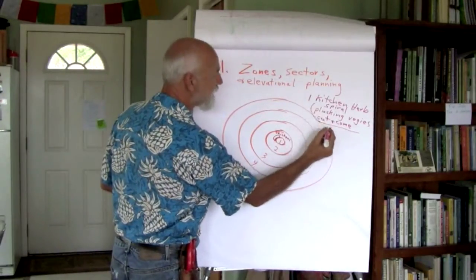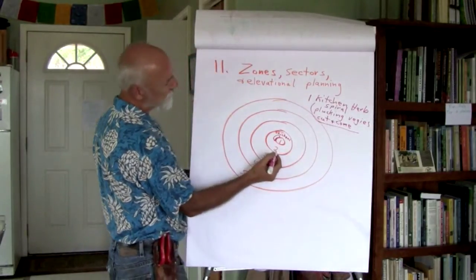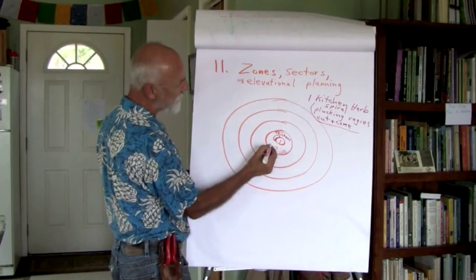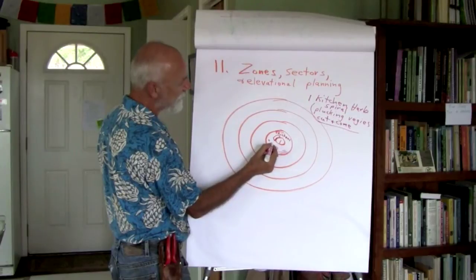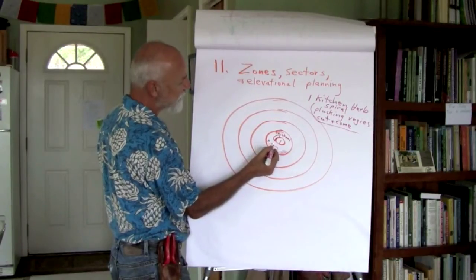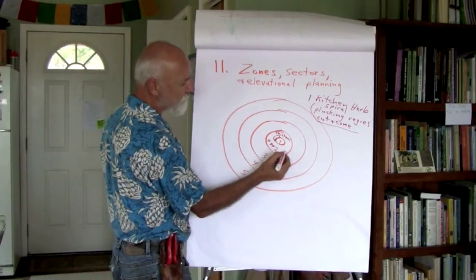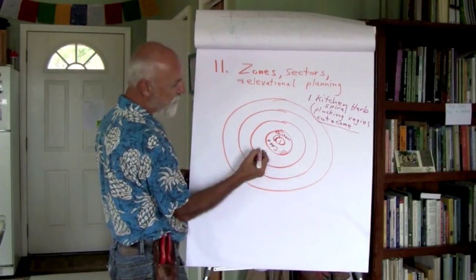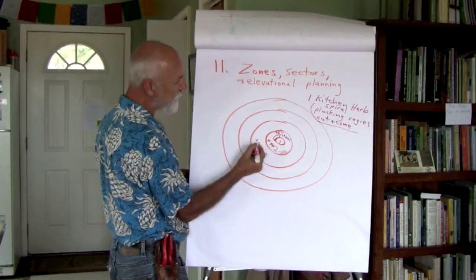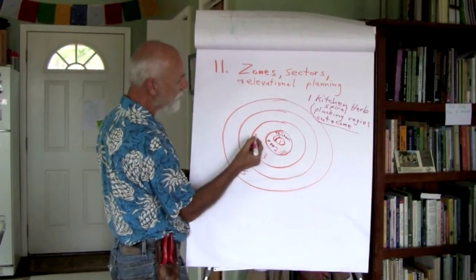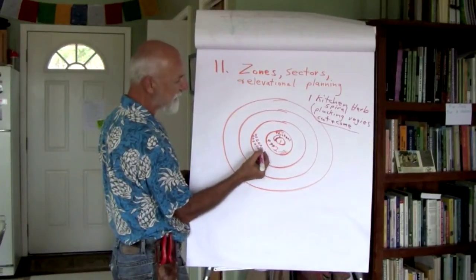So you want things that you visit a lot, but in number two, you might have the currants and some of the berries. You might have some dwarf fruit trees. So, you have to visit them more often, but not as often as your zone one items. Zone three might be the apple orchard or something, you only have to go there a few times a year and manage it not that often.